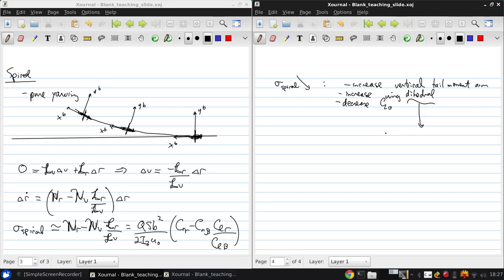Dihedral is the angle the wings are shifted upward. So to illustrate this, if this is a fuselage, this is the dihedral angle epsilon.